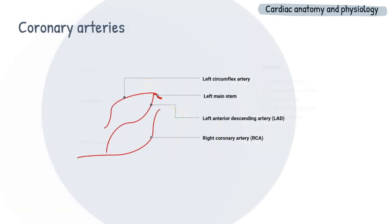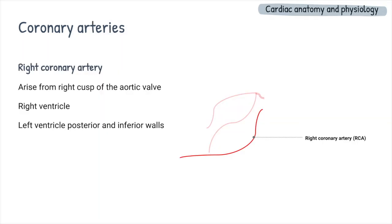Last but not least, the myocytes are supplied by a network of coronary arteries arising from the aorta. The coronary system is divided into left and right, with the right coronary artery, or RCA, arising from the right cusp of the aortic valve, and the left coronary artery from the left coronary cusp, propagating along the heart and branching out into smaller arteries.